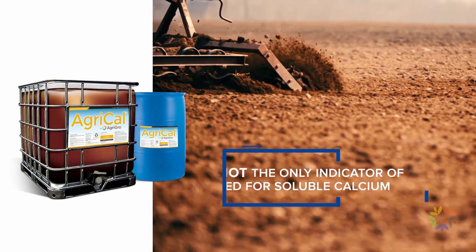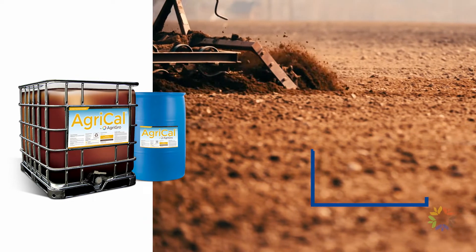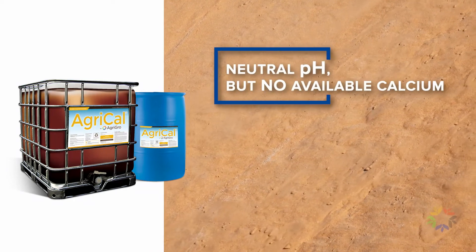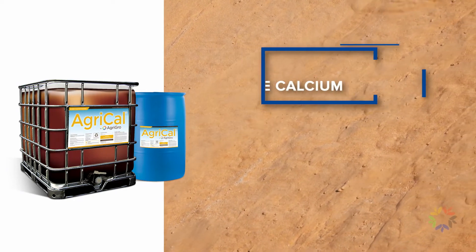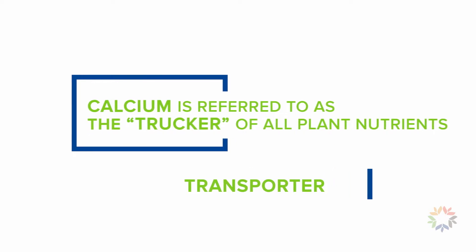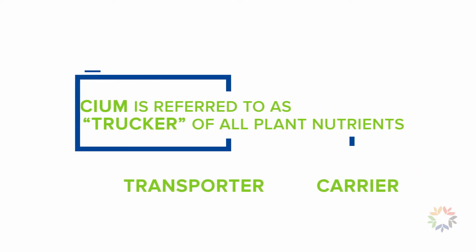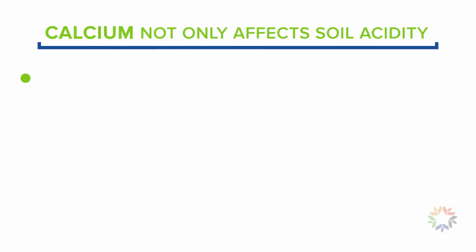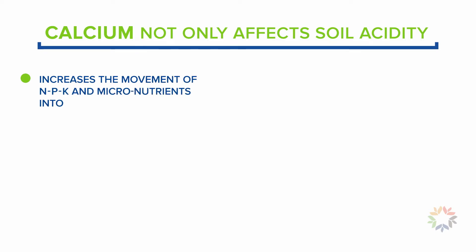For example, when pure sand is analyzed it has a neutral pH but no available calcium. Referred to as the trucker of all plant nutrients, calcium not only affects soil acidity but increases the movement of N, P, K, and micronutrients into the plant.